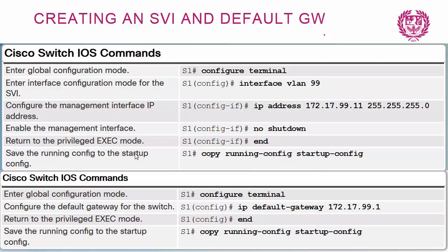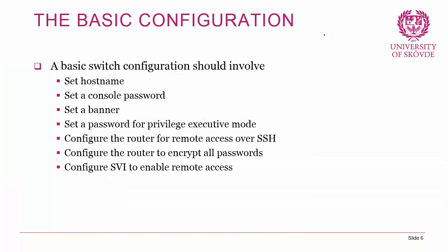If you want to connect to the switch from outside the local network, the switch must have a default gateway — just like a computer. We do that with 'ip default-gateway [IP address]' in configuration terminal, where the default gateway is the IP address of the closest router. The default configuration steps include: setting a hostname, a console password, a banner, a privileged exec password, configuring SSH for remote access, encrypting all passwords, and configuring the switch virtual interface for remote access.